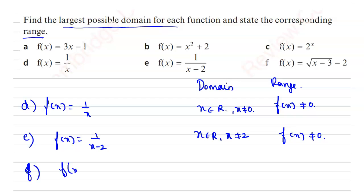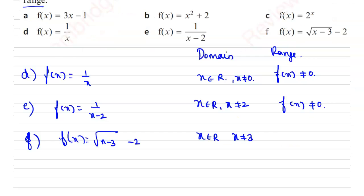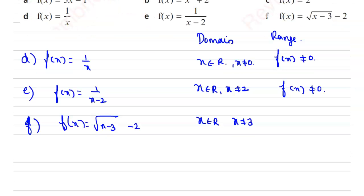Then last one, f of x is given as root of x minus 3 minus 2. So here the domain is x belongs to R and x not equal to 3. Suppose if we take x is equal to 3, then we will get root of 0, there is no meaning in it. So here f of x will be greater than or equal to minus 2.